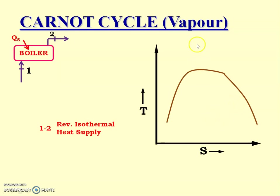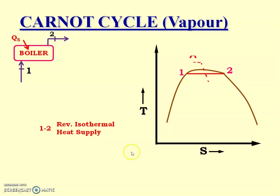Now let us draw the TS (temperature-entropy) diagram. Again, we have to draw the saturation curve. The first process is reversible isothermal, so temperature remains constant. It is denoted by a horizontal line since this axis represents temperature, so it is constant — process 1 to 2, heat is supplied.